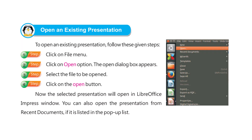Open an Existing Presentation. To open an existing presentation, follow these given steps. Step 1: Click on File menu. Step 2: Click on Open option. The Open dialog box appears. Step 3: Select the file to be opened. Step 4: Click on the Open button. Now the selected presentation will open in LibreOffice Impress window. You can also open the presentation from recent documents if it is listed in the pop-up list.